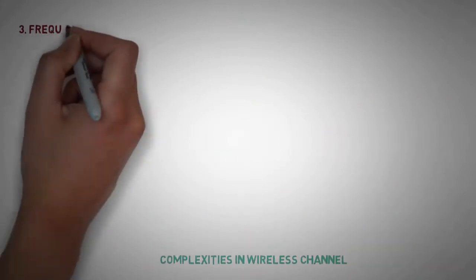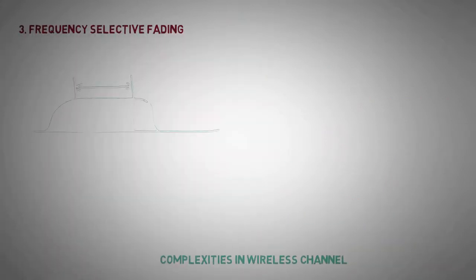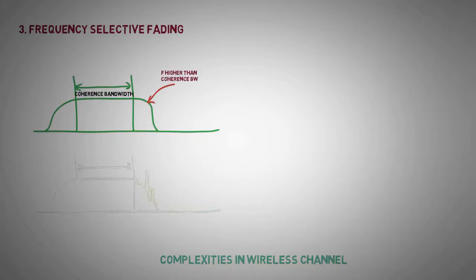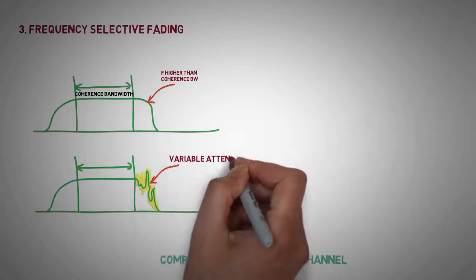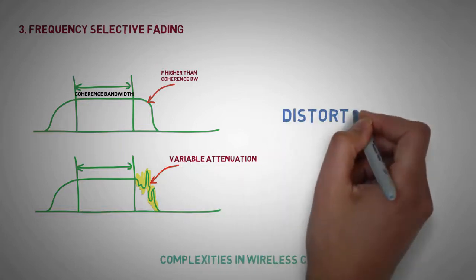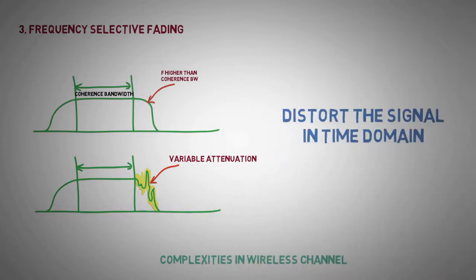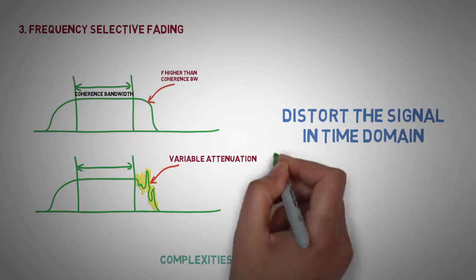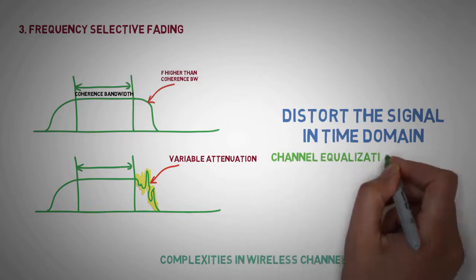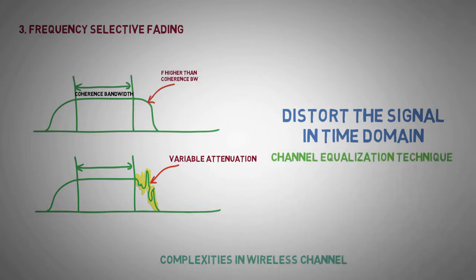Frequency selective fading: Signals having bandwidth higher than the coherence bandwidth of the channel face variable attenuation at different frequencies. This ultimately distorts the signal and gives rise to frequency selective fading. Complex channel equalization techniques are employed to reduce it.